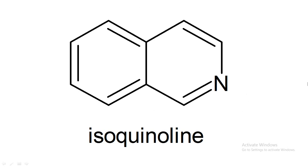The difference between pyridine and quinoline structure versus isoquinoline structure is that in the case of pyridine, the nitrogen is present at the first position. In the case of quinoline, the nitrogen is again present at that same position. But in the case of isoquinoline, the prefix 'iso' means second in chemistry, so the nitrogen is present at the second position.